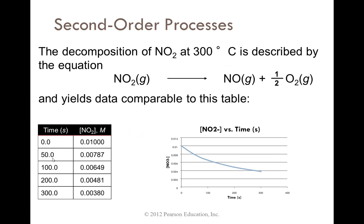The decomposition of NO2, nitrogen dioxide, at 300 degrees Celsius is described by the equation NO2 yields NO plus one-half O2, and yields data comparable to this table. This tells us how the concentration changes over time. Here's a graph indicating that. That is not a straight line, so we know it's not zero order.